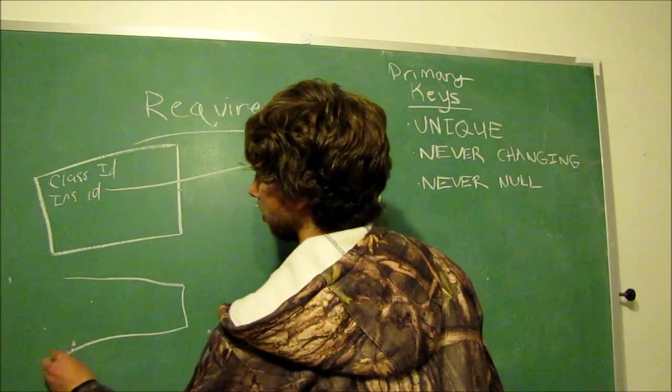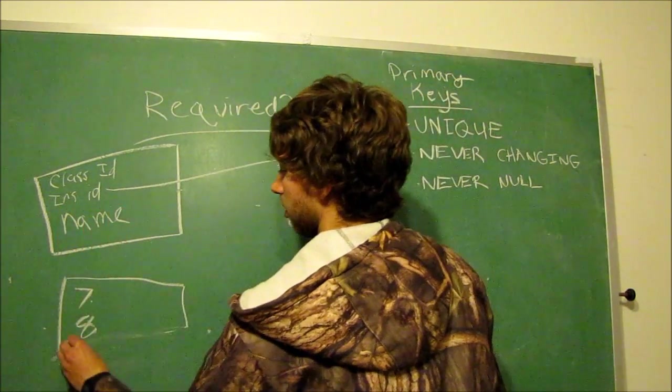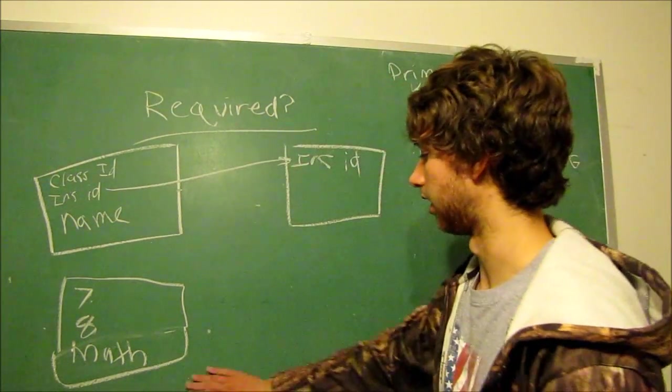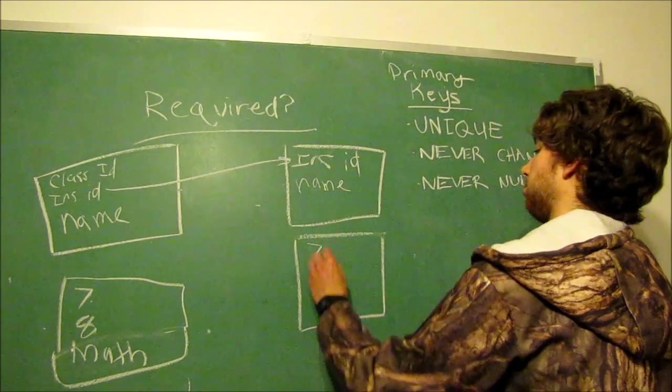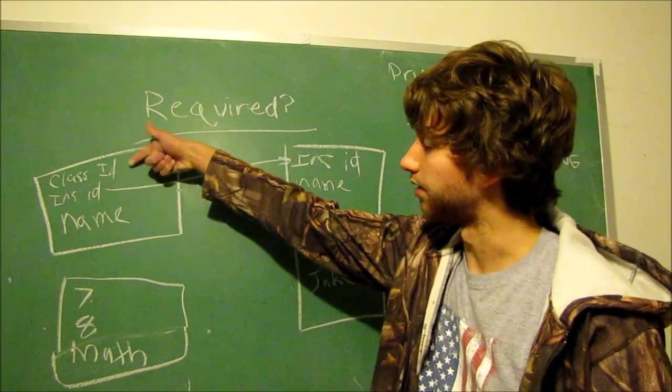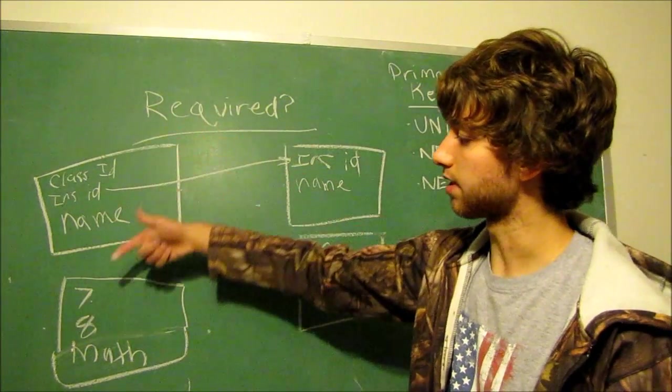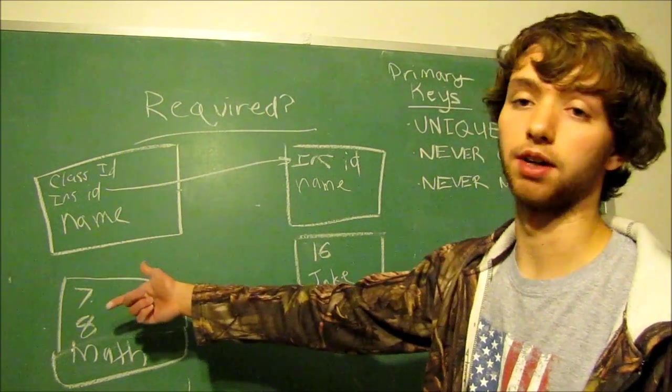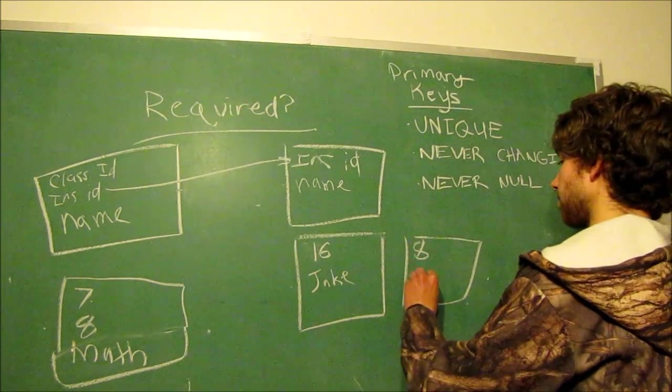Let's give some examples. We have a row with the class ID 7, the instructor ID 83, and we'll add a column, the name of the class. We have a column and it's math. And then we can have an instructor over here. His ID could be 16, and his name could be Jake. So this class ID is 7, and it's by an instructor 8, which we don't actually have over here yet. So that means we either have another row or we have an error. So let's say we have another class over here, and its number is 8, and it's taught by Caleb.